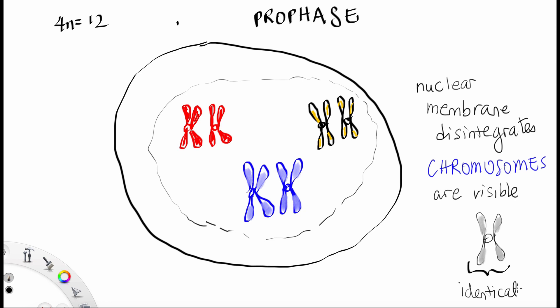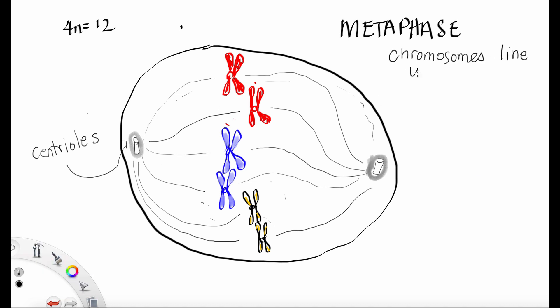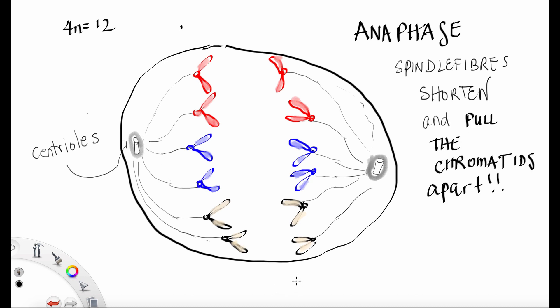So remember, the chromosomes are composed of identical sister chromatids. Now the centrioles, which are proteins that help with cell division, throw out some spindle fibers. And now it's metaphase, where chromosomes line up in the middle. Now it's anaphase, where spindle fibers shorten and they pull those chromatids apart.